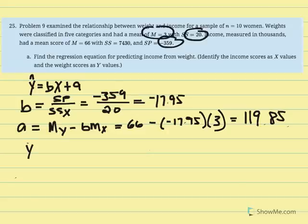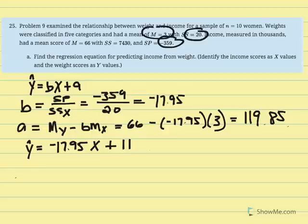Our regression equation is ŷ = -17.95 times x plus our y-intercept of 119.85. What I'm going to do with that equation is now make predictions. Given x values in the original data set, I'll predict y.